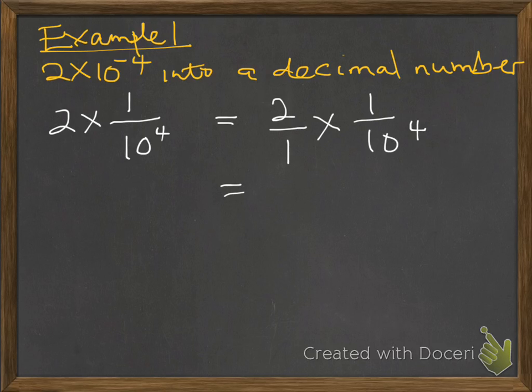Which therefore means 2 times 1, this will be 2 over the denominator, 1 times 10 to the power of 4, it remains 10 to the power of 4.